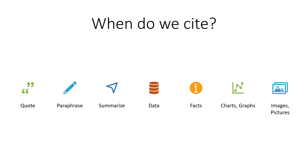It is important to provide a citation whenever you use work that you have not created. That includes any time you quote, paraphrase, or summarize information from a source. It also includes any time you use someone else's data, facts, charts, and graphs. You should also provide a citation whenever you include an image or picture that you did not take or create. Essentially, if you didn't make it, think it, or do it, you should include a citation.